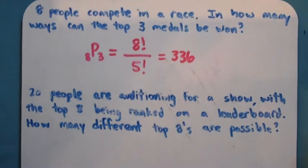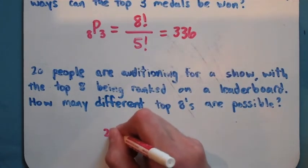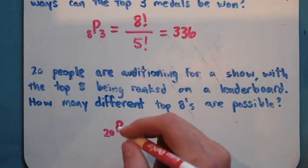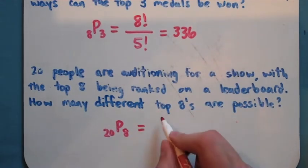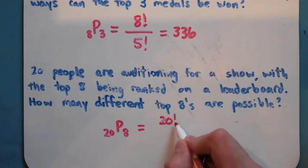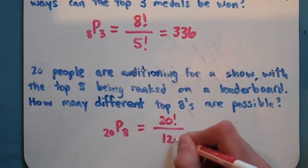For my next problem here. Again, it's a permutation because the order we put the people in for the leaderboard matters. If you're first place or second place or third or whatever, that's different. So we have 20 people and we are picking 8 of them to put in a line right here. So if we use the formula, it's going to be N factorial, this guy factorial over this minus this, which is 12 factorial.